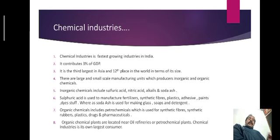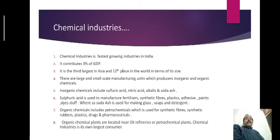There are large and small scale manufacturing units which produce inorganic and organic chemicals. Inorganic chemicals include sulfuric acid, nitric acid, alkali and soda ash. Sulfuric acid is basically used for fertilizers, synthetic fibers, plastic, adhesive paints, dyes, etc. Soda ash is used for making glass, soaps and detergents. Organic chemicals include petrochemicals, which are used for synthetic fiber, synthetic rubber, plastic, drugs and pharmaceuticals. Organic chemical plants are located near oil refineries or petrochemical plants. Chemical industries are their own largest consumers.